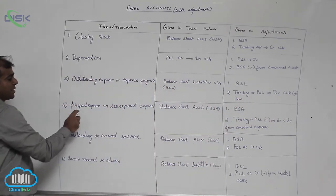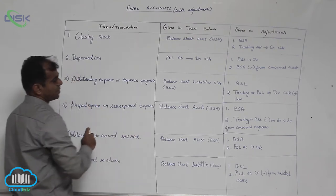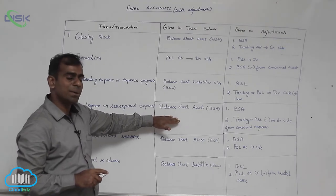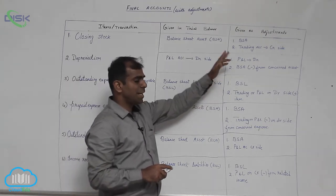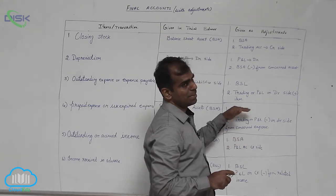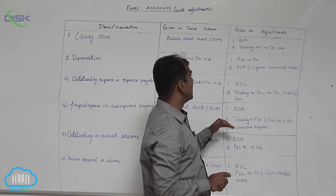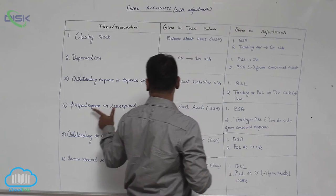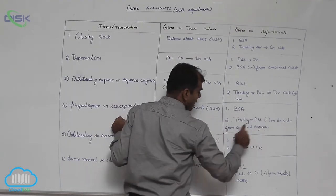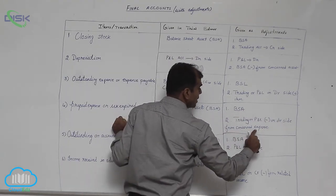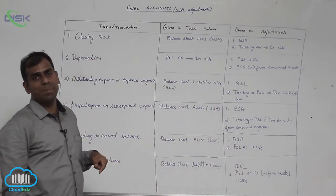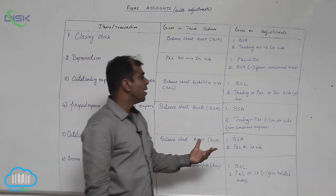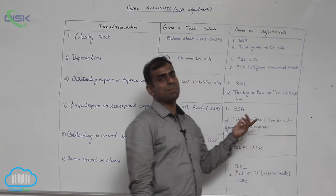For prepaid expense or unexpired expense: if given in trial balance, record it on the balance sheet asset side only. If given as adjustment, record it on the balance sheet asset side and also deduct it from the concerned expense on the debit side of the trading account or P&L account. For example, prepaid salary would be deducted from salary on the debit side of P&L account, since salary is an indirect expense.